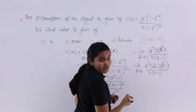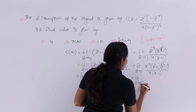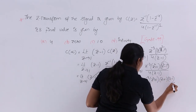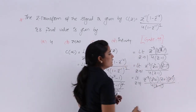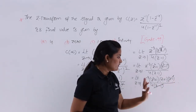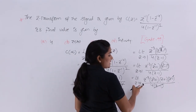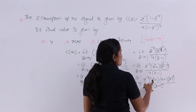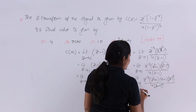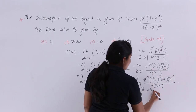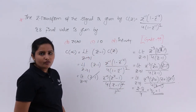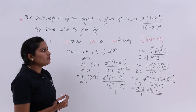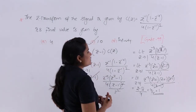Now the (Z - 1) in the numerator cancels with the (Z - 1) in the denominator. Substituting Z = 1: Z⁻³ becomes 1, (Z² + 1) becomes 2, (Z + 1) becomes 2, giving 1 × 2 × 2 = 4 in the numerator and 4 in the denominator. So the final value is 4/4 = 1. Therefore, option C is the correct answer for this problem.